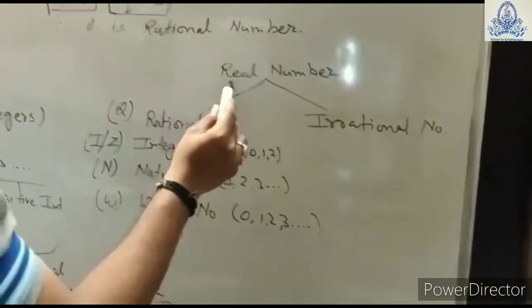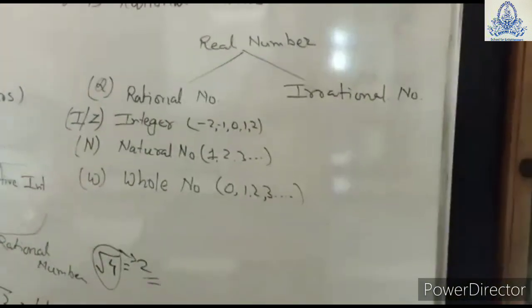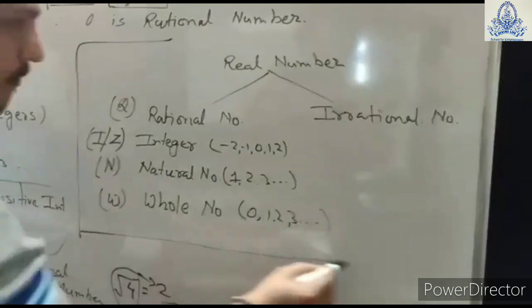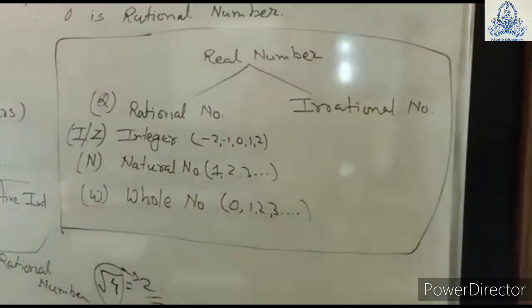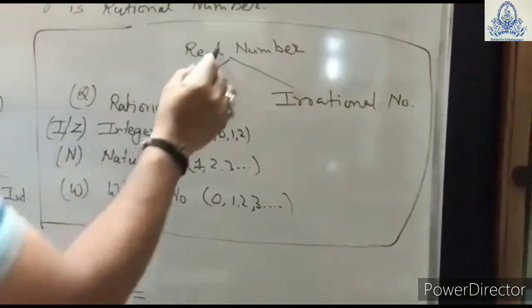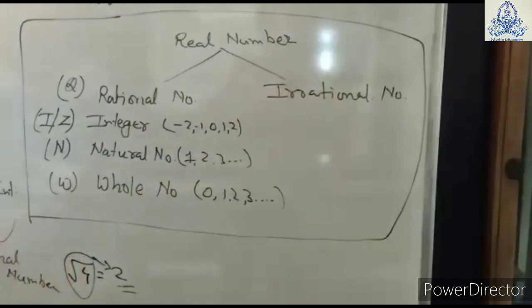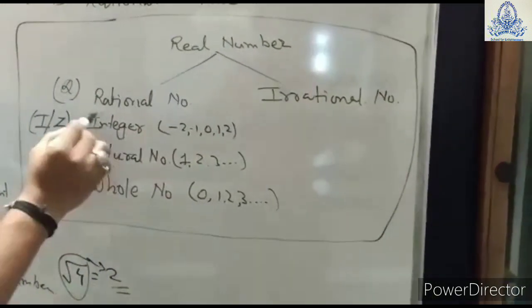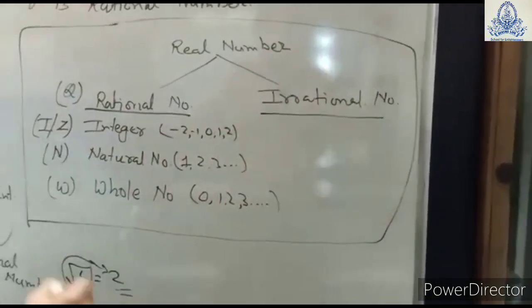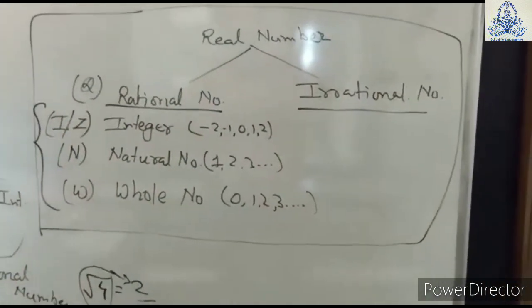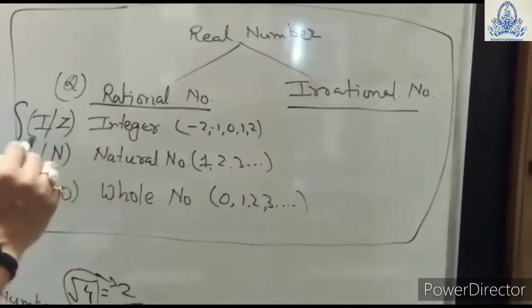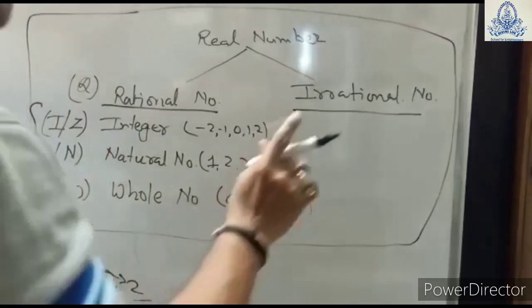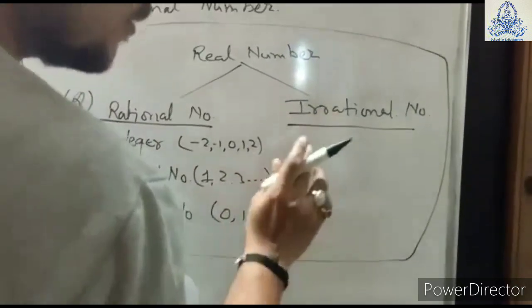To summarize: real numbers are bifurcated into two parts — rational numbers and irrational numbers. Rational numbers are of three kinds: integers, terminating decimals, and non-terminating repeating decimals.